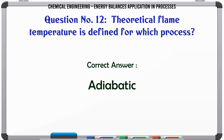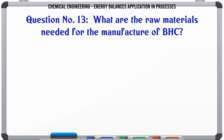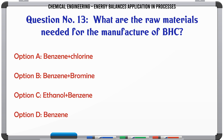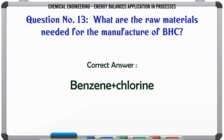What are the raw materials needed for the manufacture of BHC? A: Benzene and Chlorine. B: Benzene and Bromine. C: Ethanol and Benzene. D: Benzene only. The correct answer is Benzene and Chlorine.